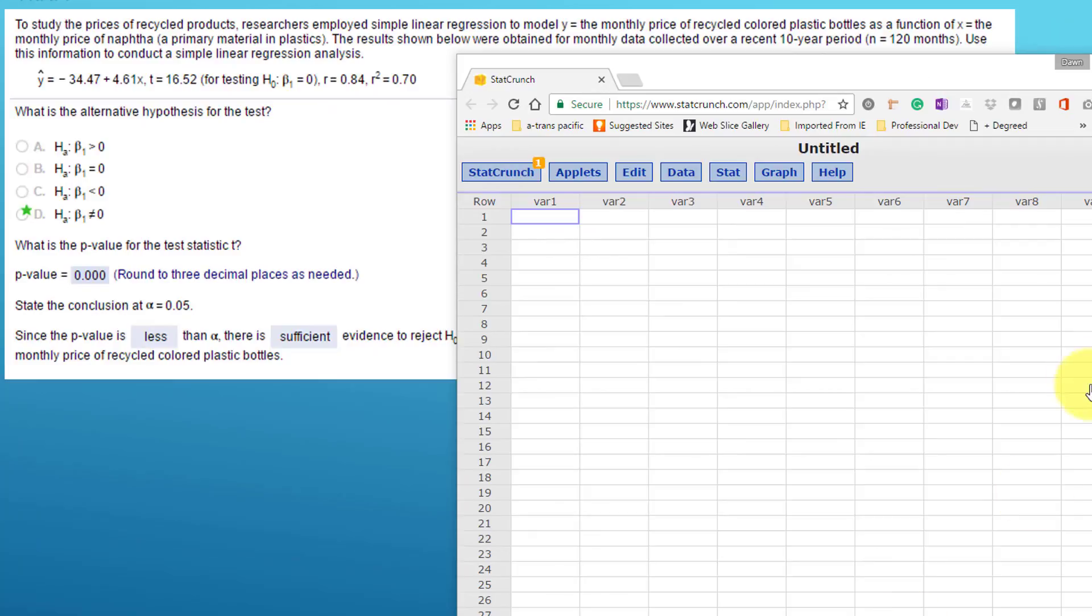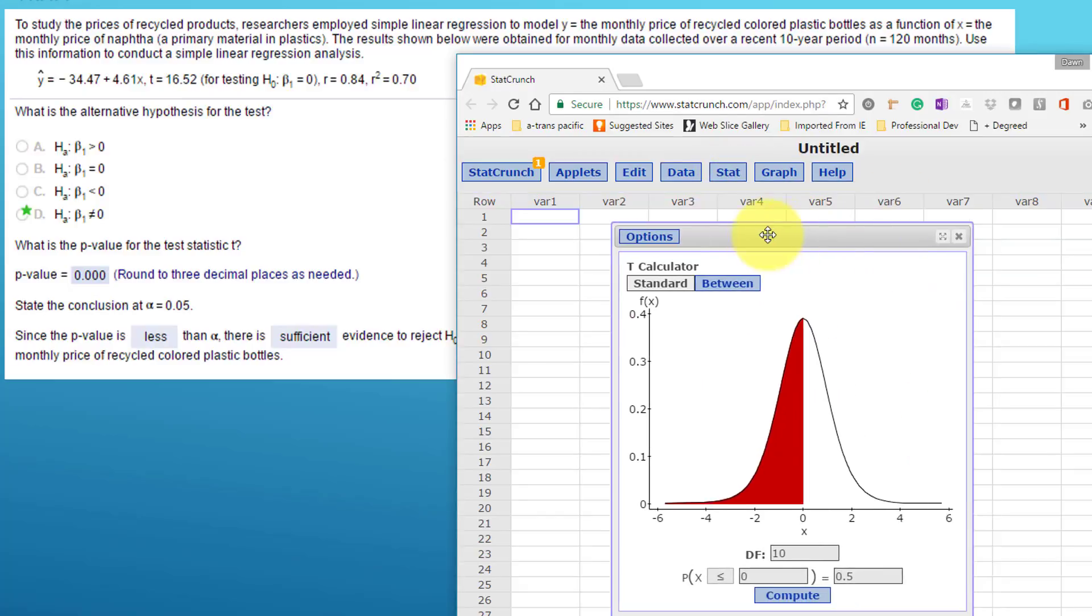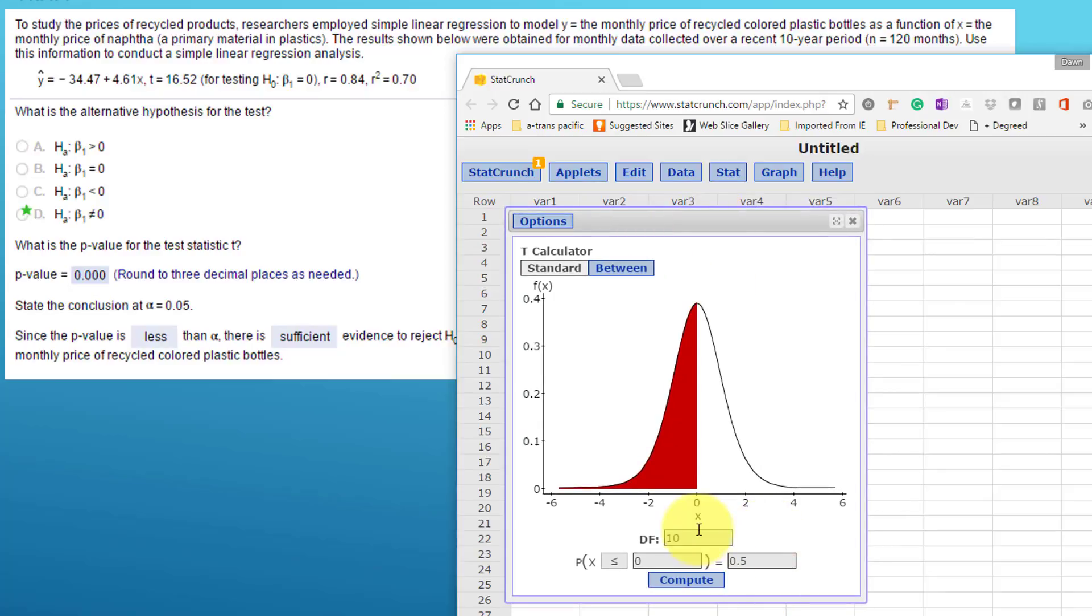Okay, I've opened StatCrunch and we want to find out the probability for a t of 16.52. We go to stat calculators and we find our t calculator. We need to know the degrees of freedom to put in here.